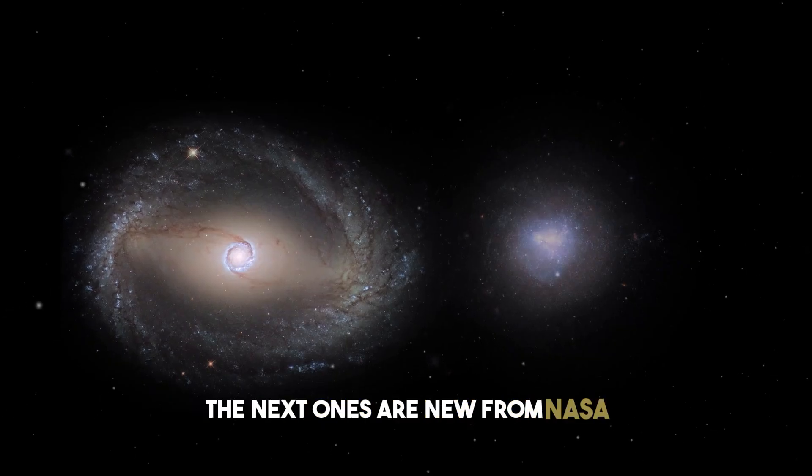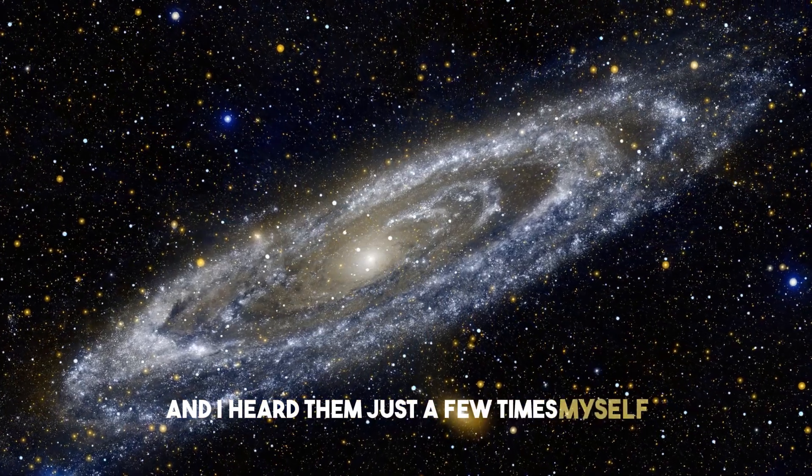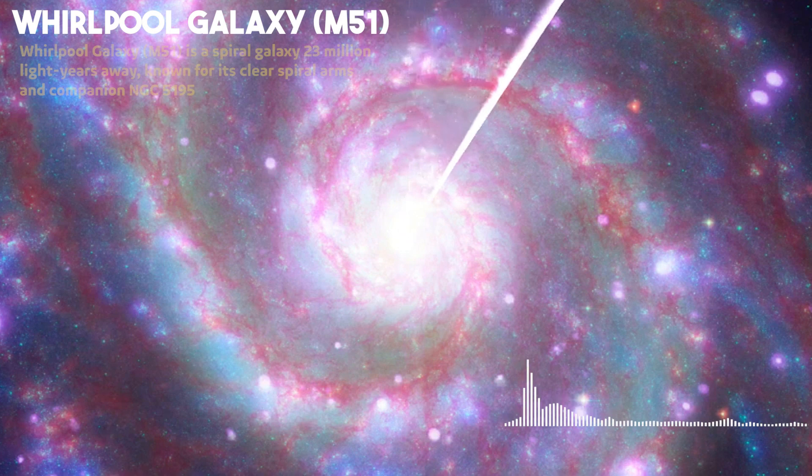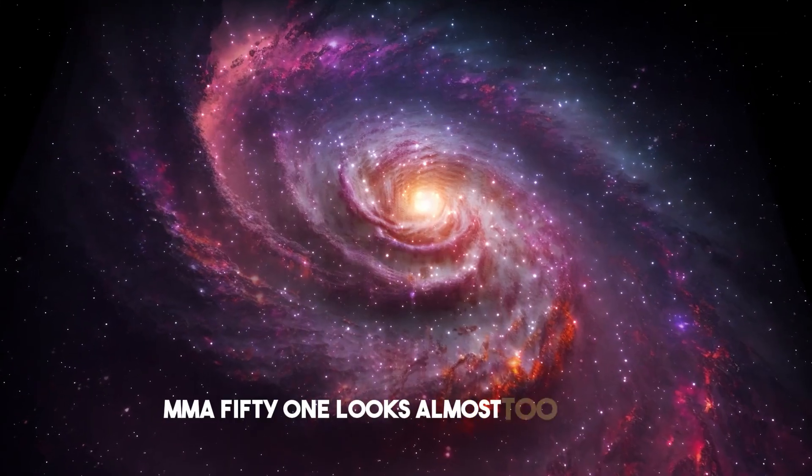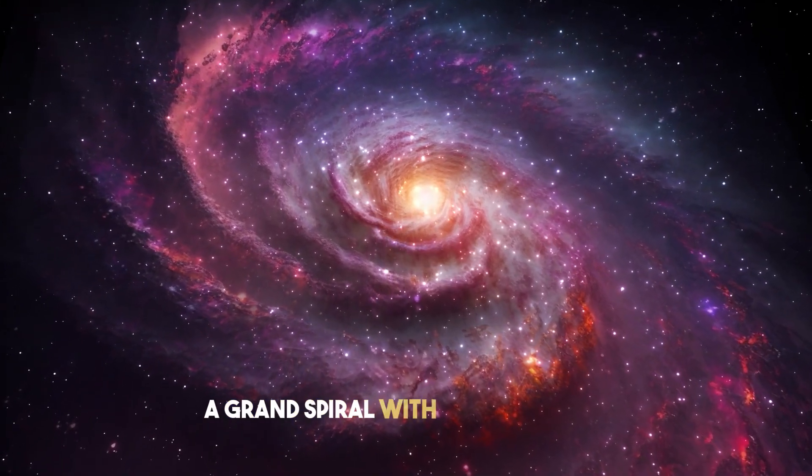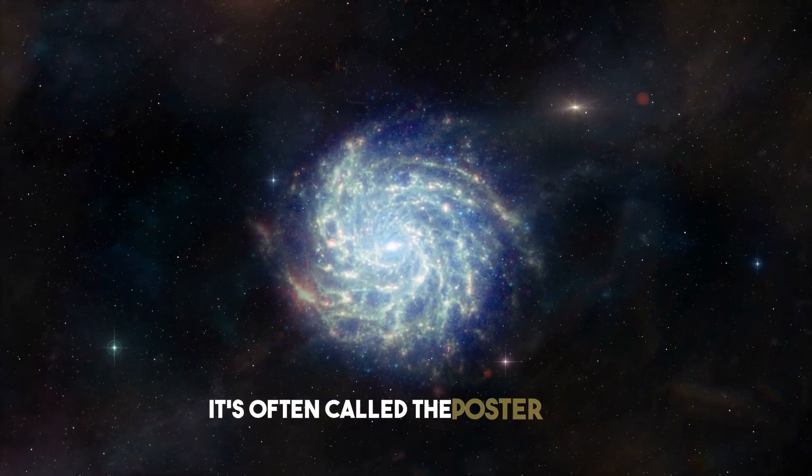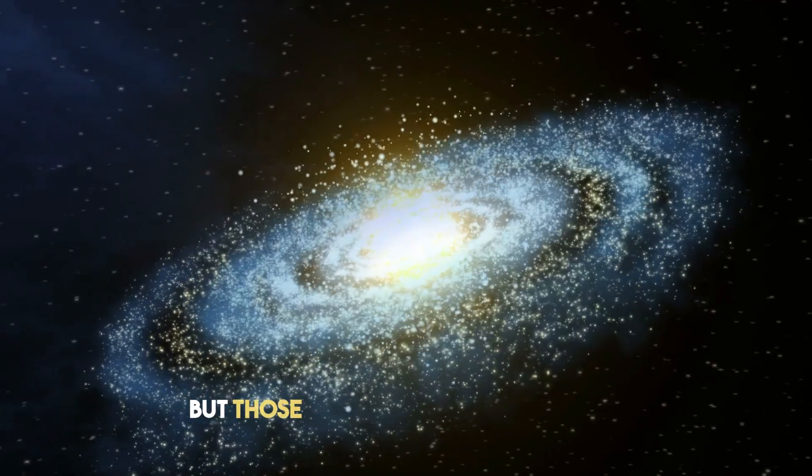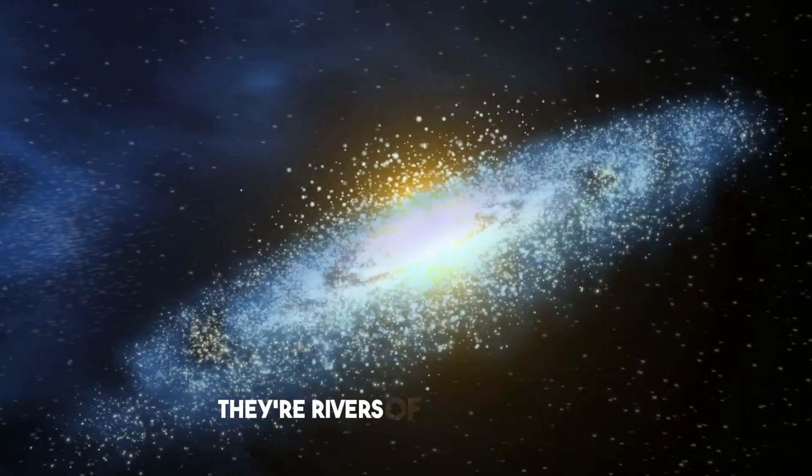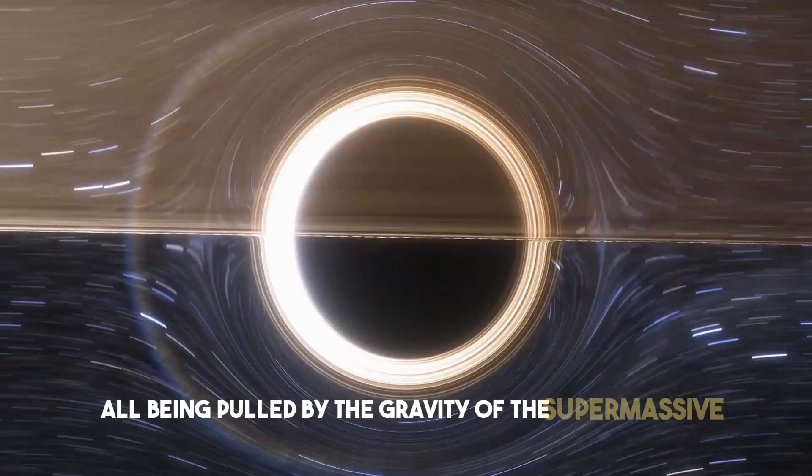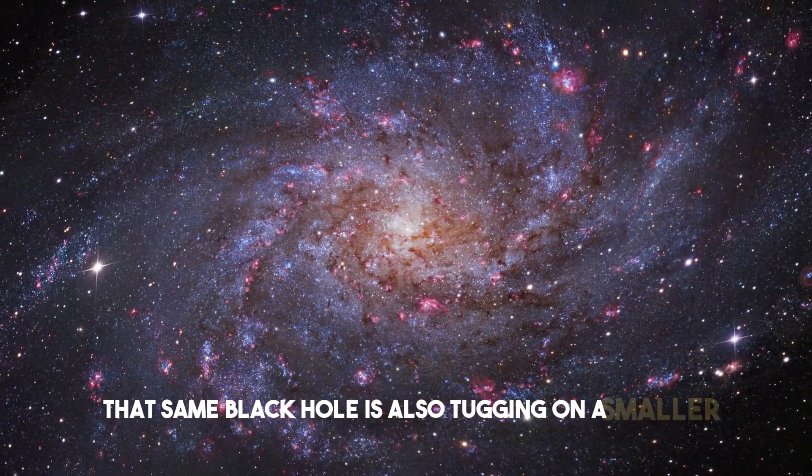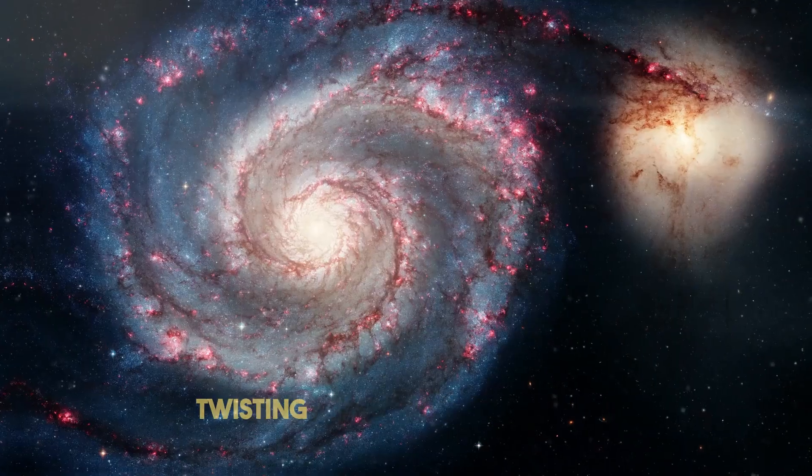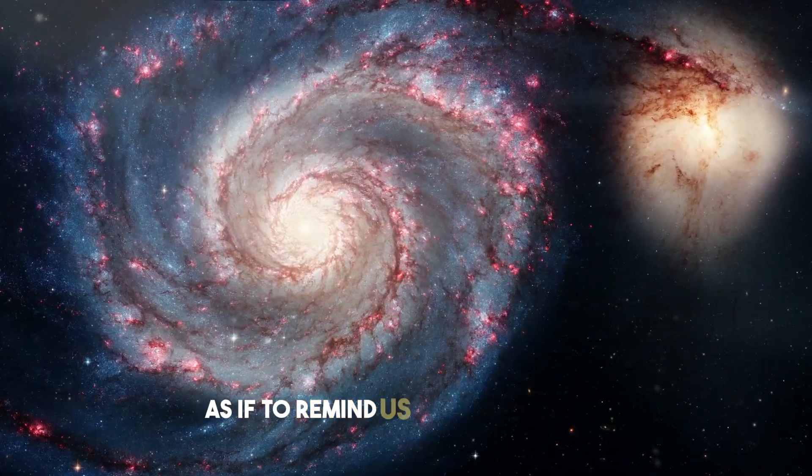The next ones are new from NASA, and I heard them just a few times myself. The Whirlpool Galaxy, M51, looks almost too perfect. A grand spiral with arms so clear, it's often called the poster child for galaxy structure. But those arms aren't just for show. They're rivers of stars and dust, all being pulled by the gravity of the supermassive black hole hidden at the center. That same black hole is also tugging on a smaller companion galaxy nearby, twisting the whirlpool into shape as if to remind us who's in charge.